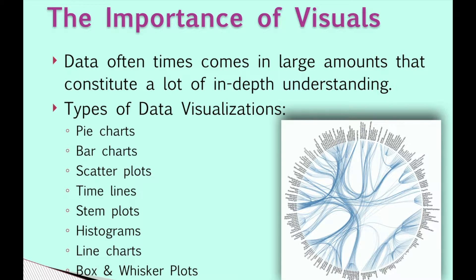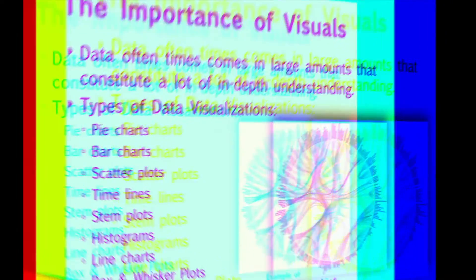Types of data visualizations consist of pie charts, bar charts, scatter plots, timelines, stem plots, histograms, line charts, and box and whisker plots. To the right, I have an example of a dependency graph.